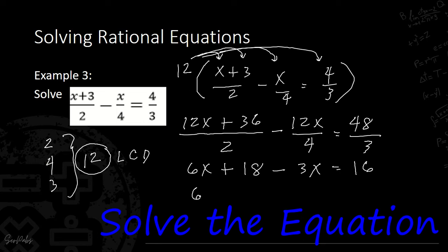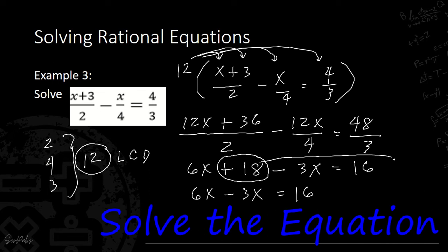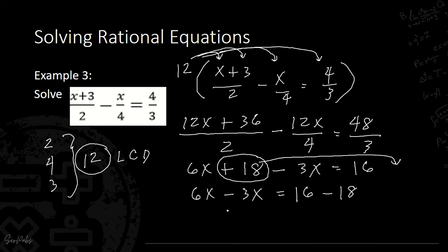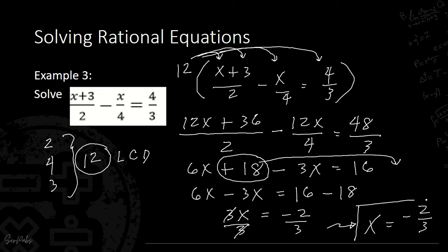Simplifying: 12 divided by 2 gives 6x plus 18; minus 12 divided by 4 gives 3x; equals 48 divided by 3, which is 16. Using transposition, 6x minus 3x gives 3x, and 18 crosses to become negative 18. So 3x equals 16 minus 18, which is negative 2. Dividing by 3, the answer for Example 3 is x equals negative 2 over 3.